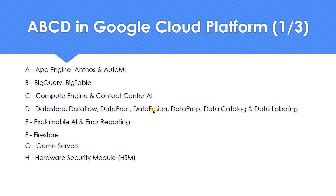Moving on to H — again a difficult one. I had to use a document called 'GCP in four words' to find a product or service under H. The closest one I found was HSM — Hardware Security Module. This is usually used in key management servers and related things. You won't directly see this service in your GCP console, but there is a service of that sort.